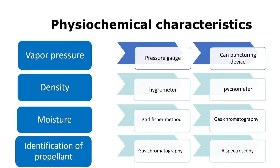Physicochemical characteristics: Vapour pressure is measured by a can puncturing device and pressure gauge; excess variation indicates presence of air in the headspace. Density is measured by pycnometer and hydrometer — the hydrometer is placed in the gas pressure tube, sufficient sample is introduced through the valve to cause the hydrometer to rise halfway, then density is read directly. Moisture content is measured by Karl Fischer apparatus and gas chromatography.